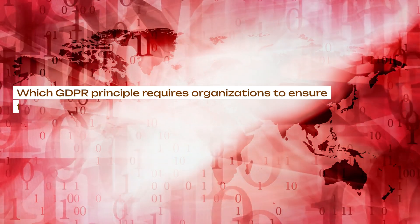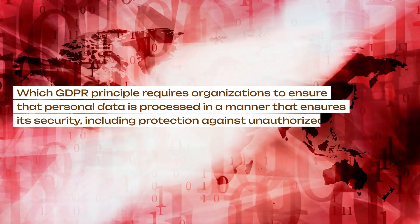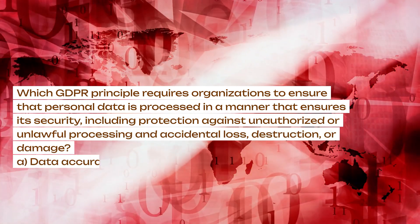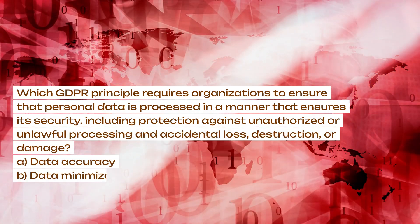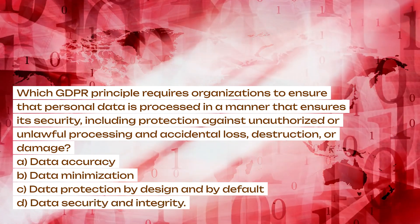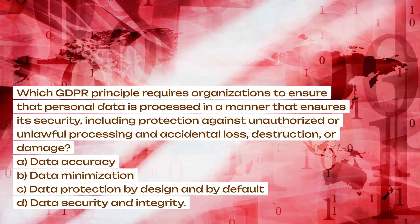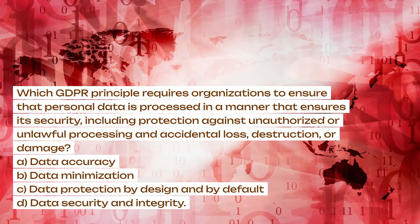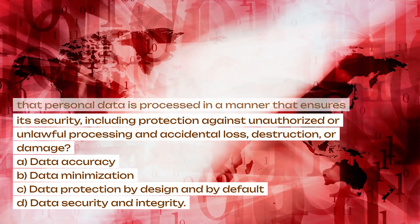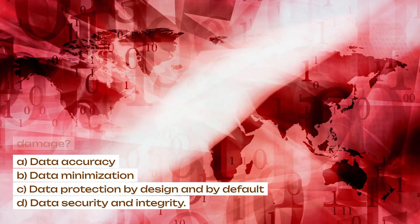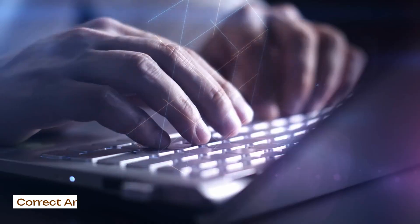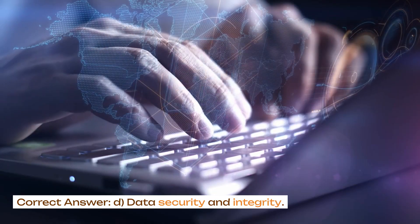Which GDPR principle requires organizations to ensure that personal data is processed in a manner that ensures its security, including protection against unauthorized or unlawful processing and accidental loss, destruction, or damage? A. Data accuracy. B. Data minimization. C. Data protection by design and by default. D. Data security and integrity. Correct answer: D. Data security and integrity.